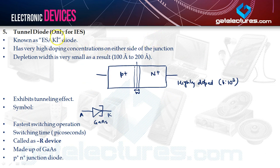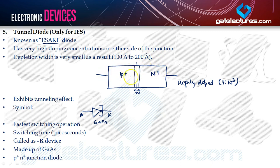Let's discuss another type of diode: the tunnel diode. It is only for IES — not for gate. It is also known as the ISACI diode. It has very high doping concentration on either side of the junction, so the depletion width is very small — of the order of 100 to 200 angstroms. Both sides are doped in the ratio of 1 to 10³, which is a heavily doped semiconductor.